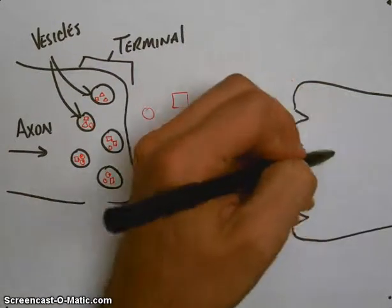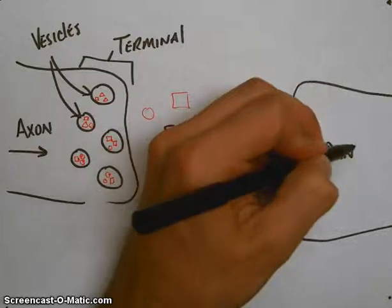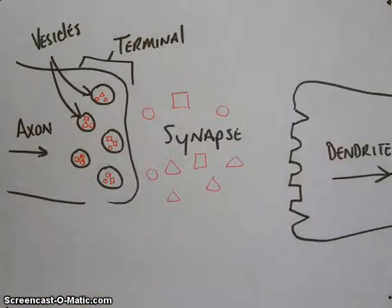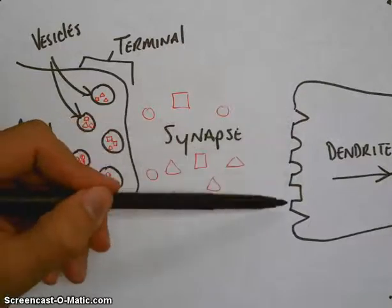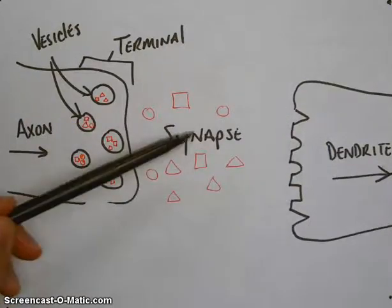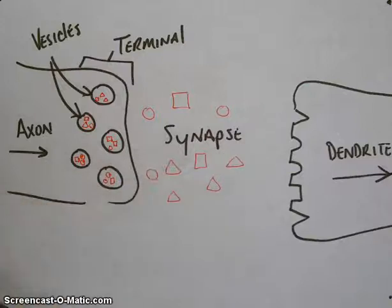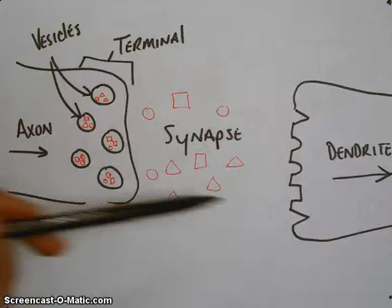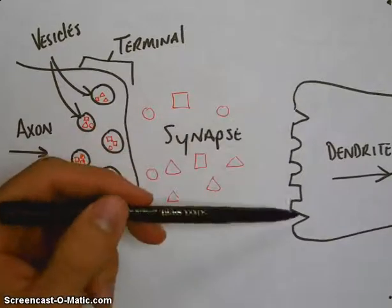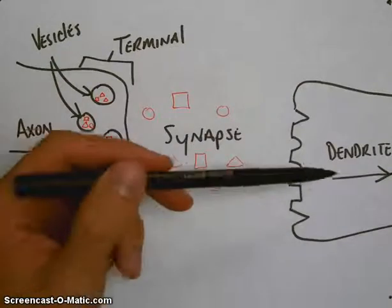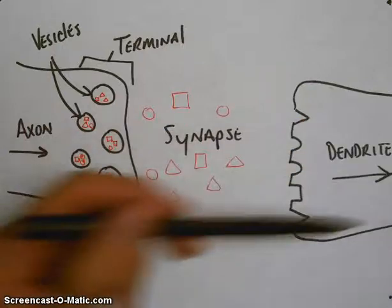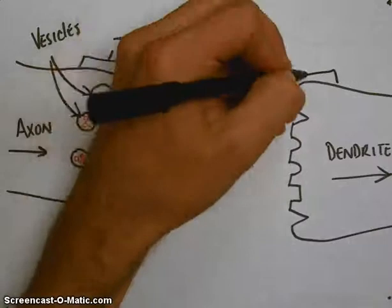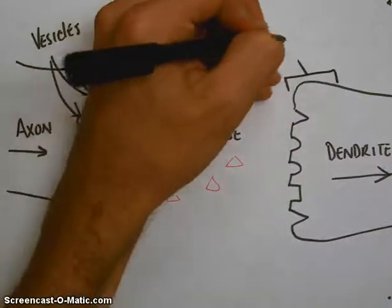Over here we have our dendrite. You'll see the end of the dendrite, it's going to match up with these neurotransmitters, these specific neurotransmitters. It works kind of like a lock and key, right? So the triangle would go here, circle would go here, another circle would go here. And when these neurotransmitters connect and have the correct matching, it's going to activate this neuron so it continues the message along the path. We call the end of this dendrite a receptor, which means it's receiving the information.